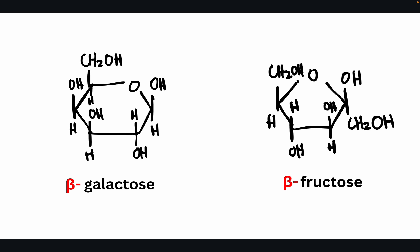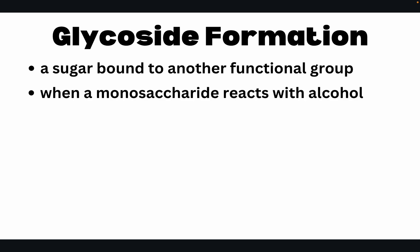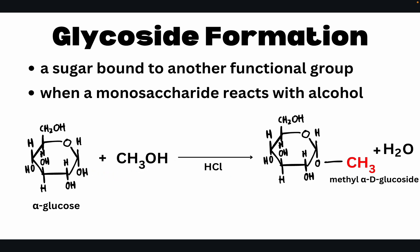The first chemical reaction of monosaccharides we'll discuss is glycoside formation. A glycoside is a sugar bound to another functional group. This happens when a monosaccharide reacts with an alcohol — for example, alpha glucose reacts with methanol using HCl as a catalyst. The hydrogen reacts with the OH, releasing H2O, and the remaining CH3 bonds to the remaining oxygen, forming methyl alpha-D-glucoside.